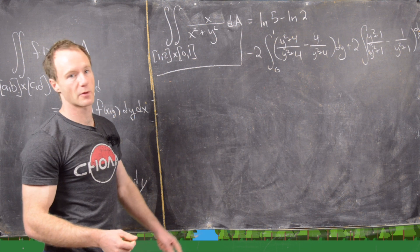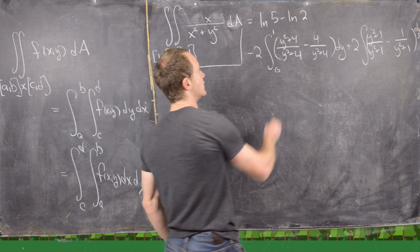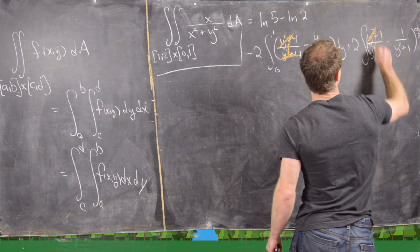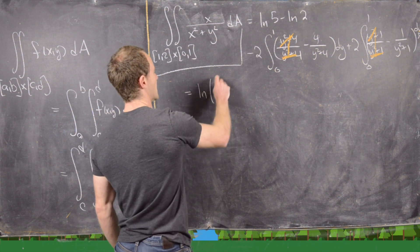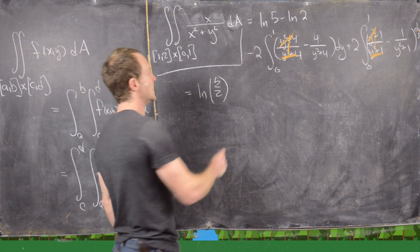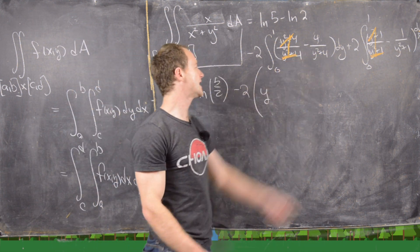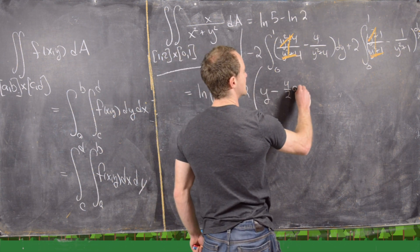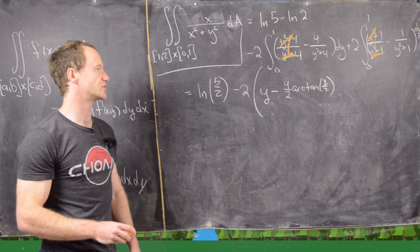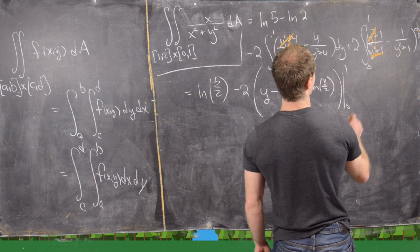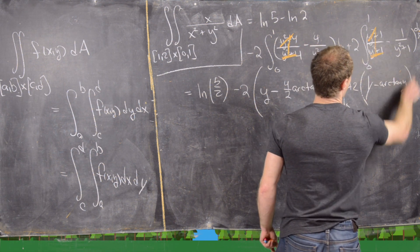Now the y²+4 over y²+4 and y²+1 over y²+1 terms both simplify to 1, making those parts easy. Combining everything: we get ln(5/2) using log rules, then minus 2 times the antiderivative — the antiderivative of 1 is y, and for the 4/(y²+4) term we use the formula giving (4/2)·arctan(y/2). Similarly for the 1/(y²+1) term we get arctan(y). All of these are evaluated from 0 to 1.